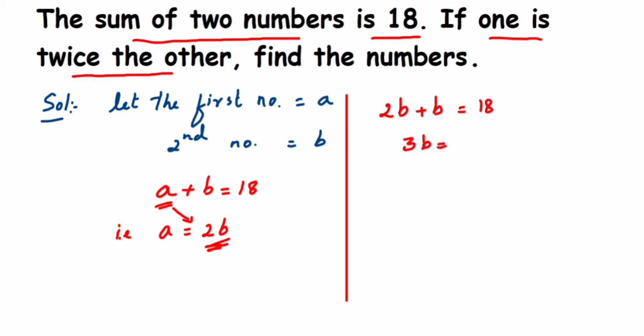Now transpose 3 to the other side, so b will be equal to 18 upon 3. Cancel 3 and 18, we'll get 6 here, not 9. We'll get 6.